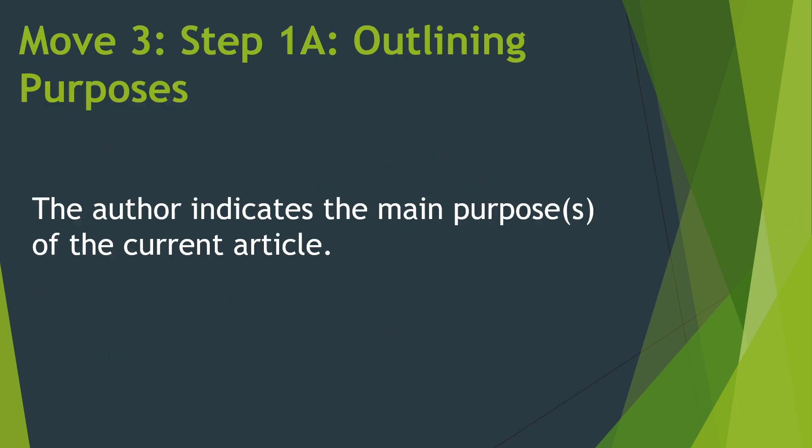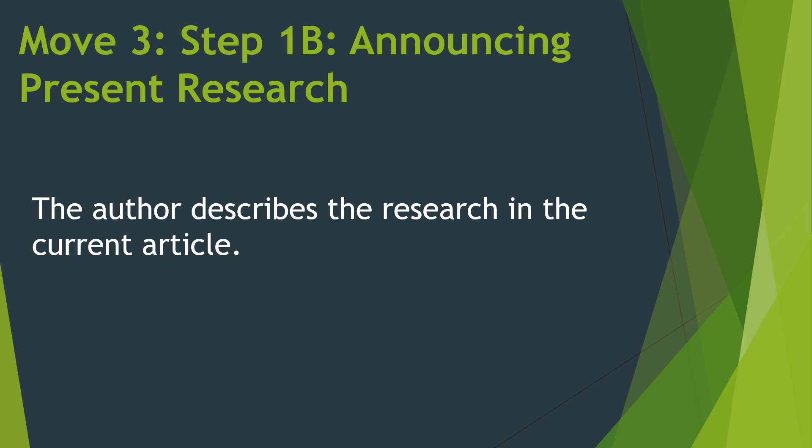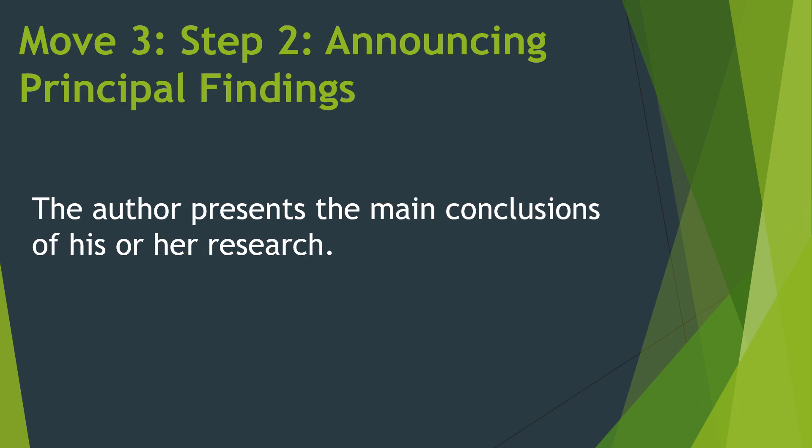Move 3, Step 1a is outlining purposes: the author indicates the main purposes of the current article, explaining why you need to conduct this study. Step 1b is announcing present research: the author describes the research in the current article — you discuss what your research is all about. Step 2 is announcing principal findings: the author presents the main conclusions of the research. You explain here how your target community can benefit from the study, since you already have projected outcomes of the study you want to conduct.